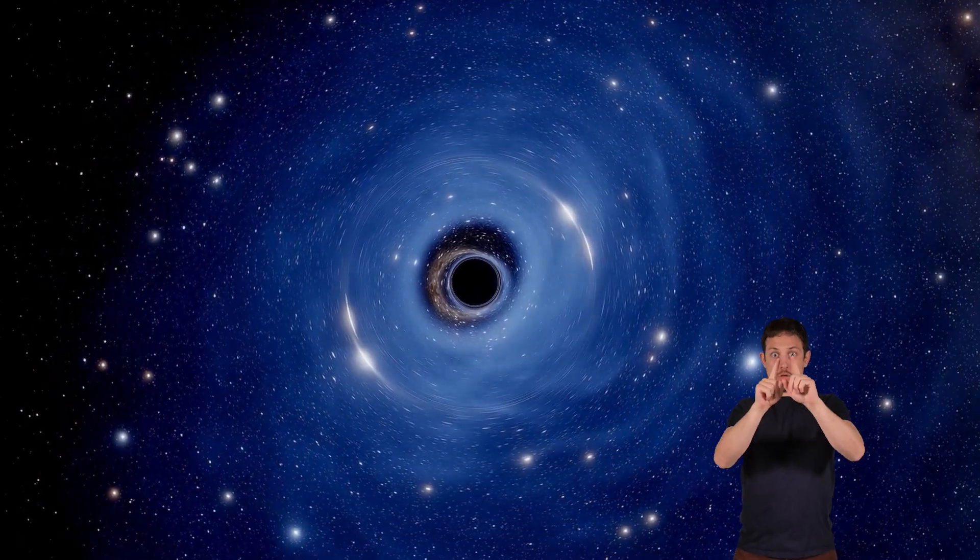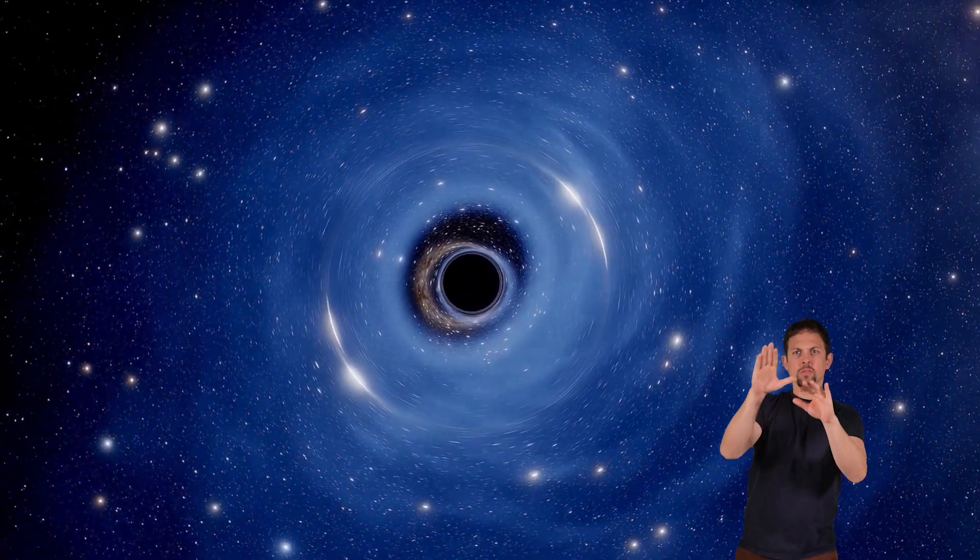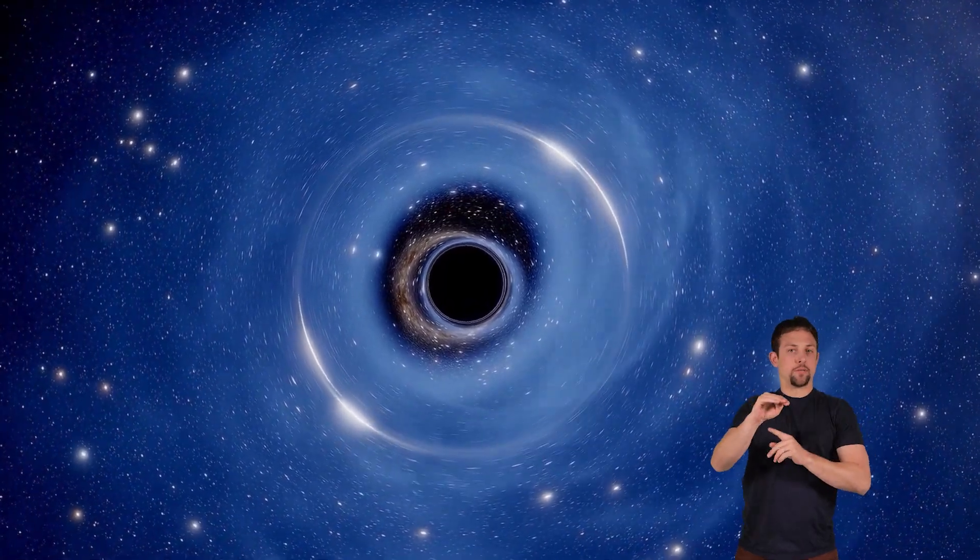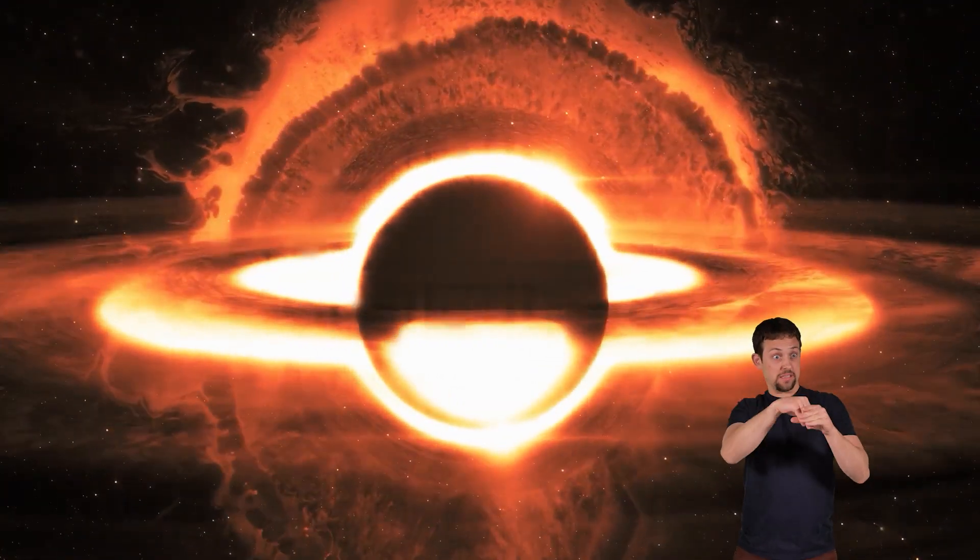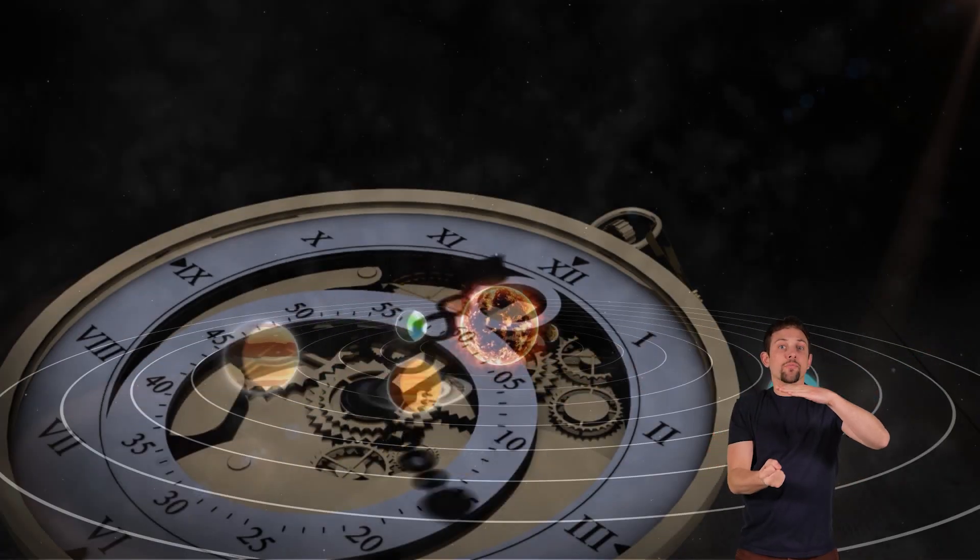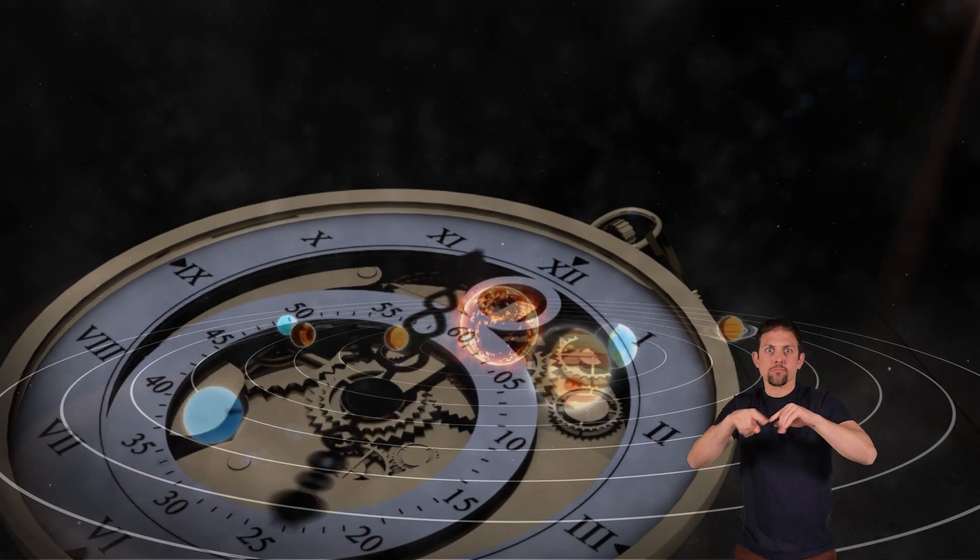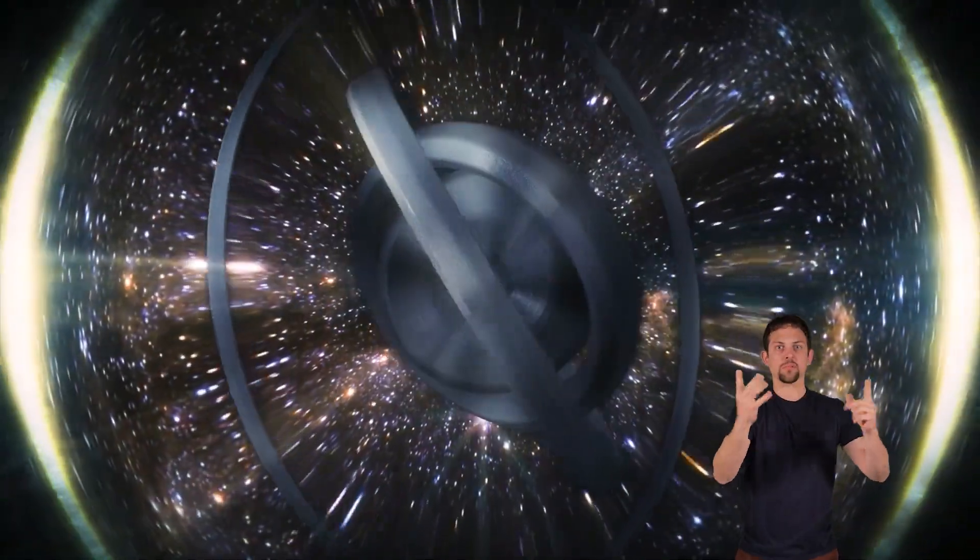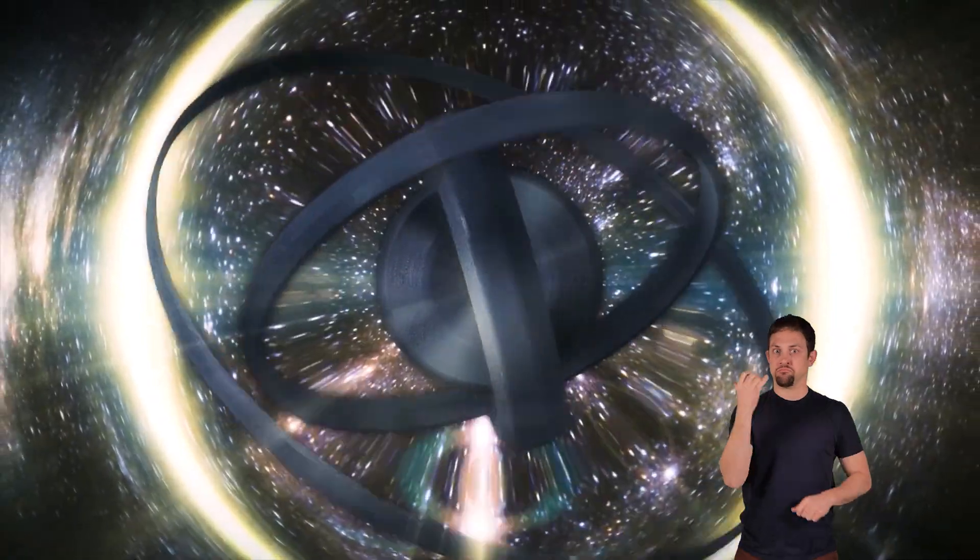They also observe how stars move around a black hole as a way to help determine its mass. What happens inside of a black hole remains a mystery. Some scientists think that the laws of physics might stop working the way they usually do, which means that gravity, time, and how objects move could be completely different inside a black hole. Whoa.